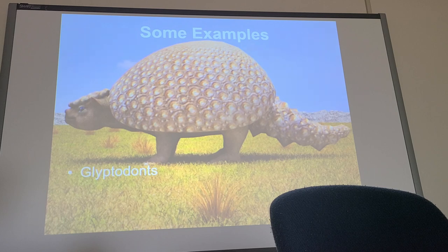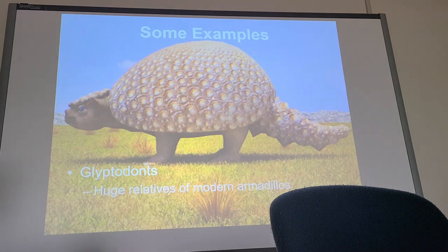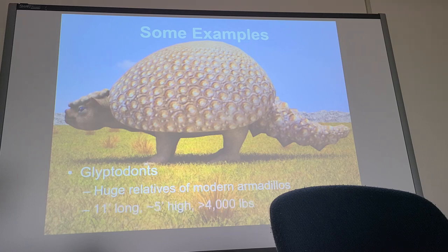Here's a glyptodont — and you notice it's a drawing because they are extinct. But they're still important. These things were huge: 11 feet long, 5 feet high, over 2 tons. That is a big armadillo. To me, in size and shape they look a whole lot like a Volkswagen Beetle.